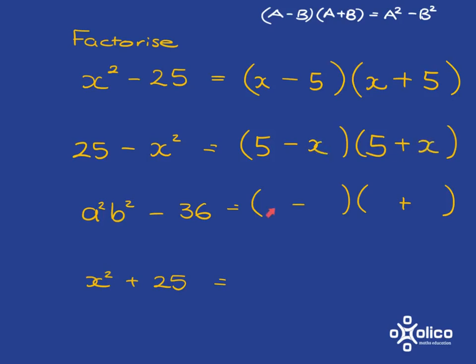For this one, this times this must give you a squared b squared, so it must be ab. And this times this must give you 36, so it must be 6, because 6 times 6 is 36.